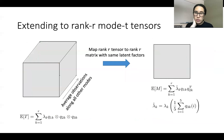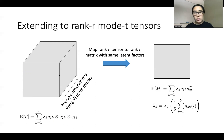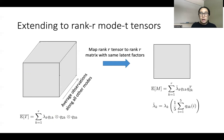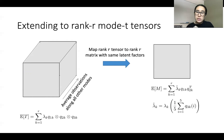We can extend this idea to general rank-R, mode-T tensors. We fix two modes of the tensor and average out observations along all other modes, mapping a rank-R tensor to a rank-R matrix whose latent factors match those of the tensor. The row space and column spaces match, so if we can do estimation on this matrix and learn the row and column subspaces, we can use those to estimate the latent space of the tensor. Once we know the latent space, the estimation problem is easy.